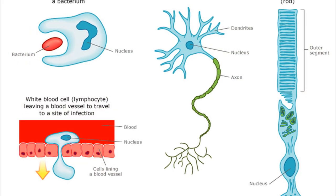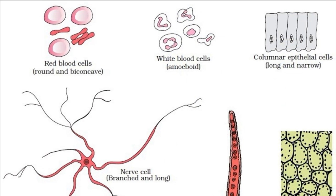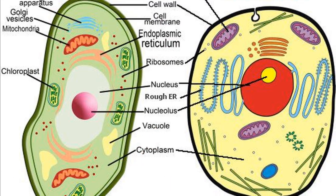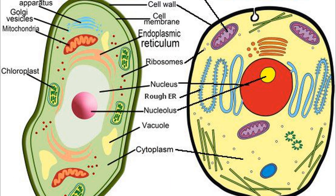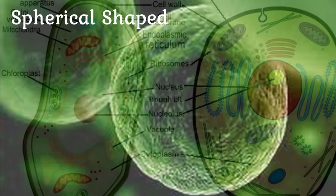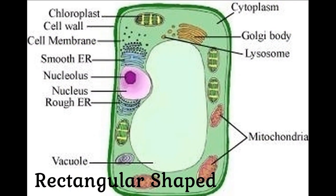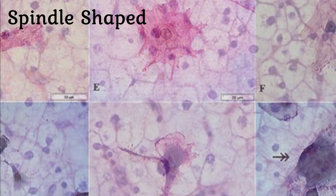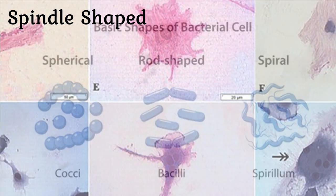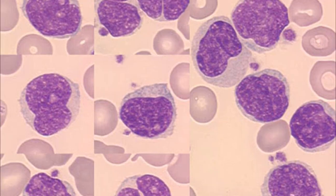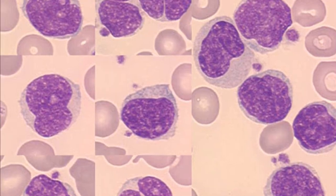The Cell – Shape, Size, and Structure. In general, there is no fixed physical shape for cells. Both plant and animal cells show various shapes such as spherical, oval, rectangular, polygonal, spindle-shaped, rod-shaped, star-shaped, or irregular, as in the case of nerve cells.